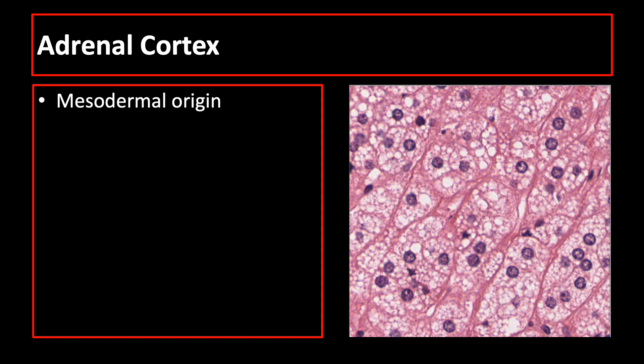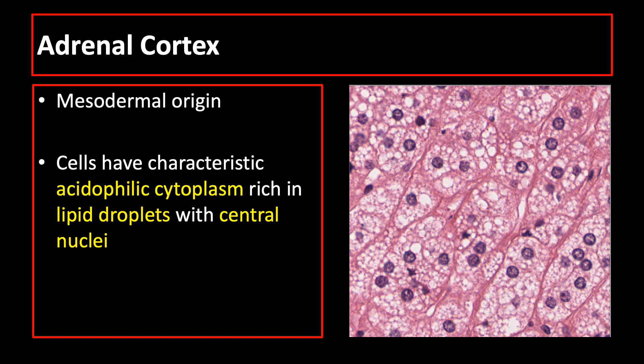The adrenal cortex is derived from mesoderm, and the cells of the adrenal cortex have characteristic acidophilic cytoplasm, centrally located nuclei, and cytoplasm that is rich in lipid droplets. Lipids are not stained by hematoxylin and eosin, so these lipid droplets are seen as unstained areas.